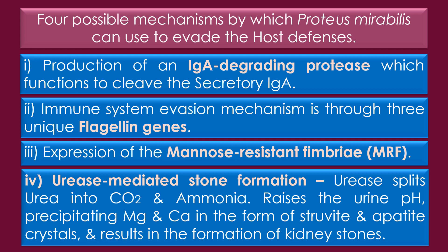The fourth mechanism is urease-mediated stone formation. Proteus mirabilis produces large quantities of urease, which splits urea into carbon dioxide and ammonia. This process raises the urine pH, precipitating magnesium and calcium in the form of struvite and apatite crystals, resulting in the formation of renal stones or kidney stones.